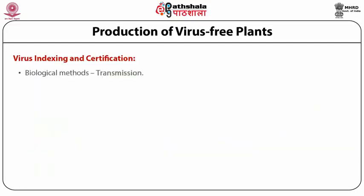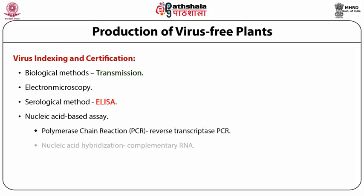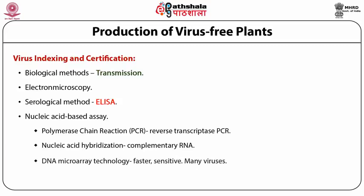There are a number of methods to check for viruses: biological methods of transmission, electron microscopy, serological methods such as ELISA, and nucleic acid-based methods like PCR, nucleic acid hybridization, complementary RNA, and DNA microarray technology. Certified virus-free plants must be maintained in a net house; otherwise they will get reinfected.